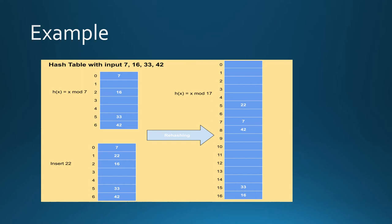By using the hash function x mod 17, the values 7, 16, 33, 42 and 22 are placed in the hash table. Here 22 is placed at the key value 5, 7 is placed at the key value 7, 42 is placed at the key value 8, 33 is placed at the key value 15 and 16 is placed at the key value 16.